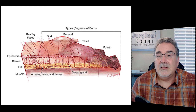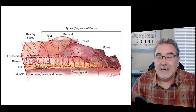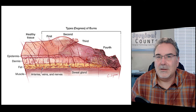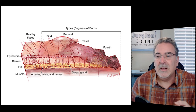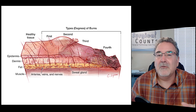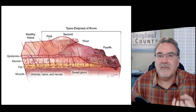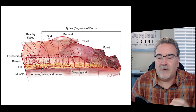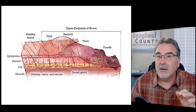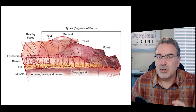Fourth-degree burns get down past the fatty layer and into the muscle underneath itself — the muscle itself is burning. This can become very charred with a very black look. So a third-degree burn shows a pearly white coloring, versus a fourth-degree burn's very charred black coloring.